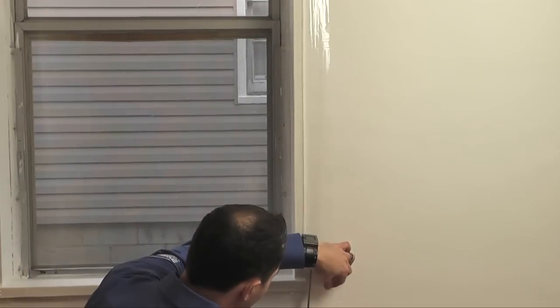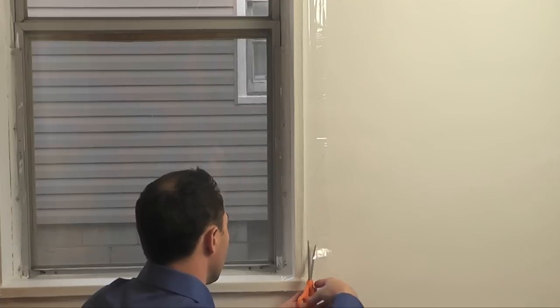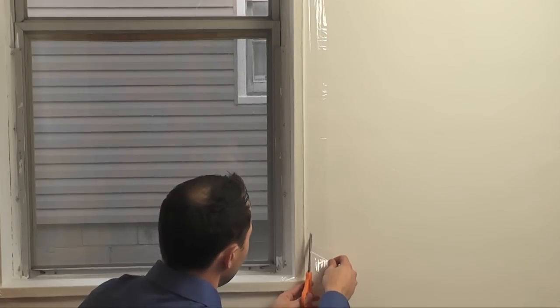With your scissors, trim any excess film around the edges of your windows. One window down, just repeat the entire process for the rest of your windows.